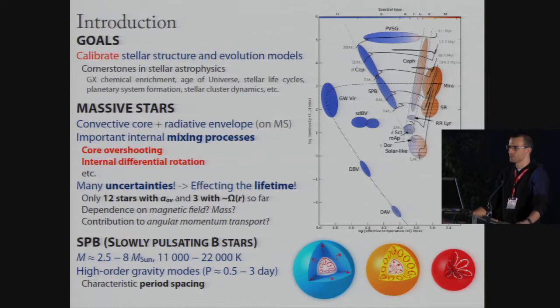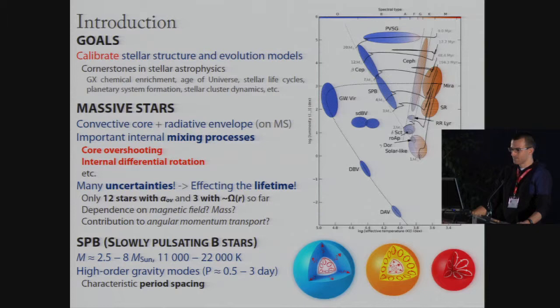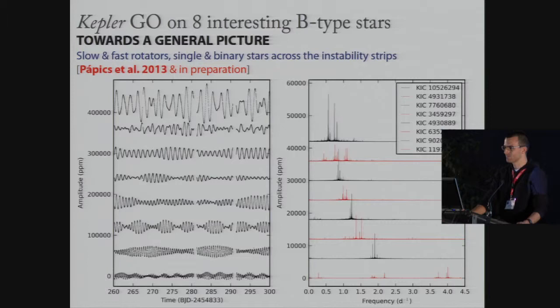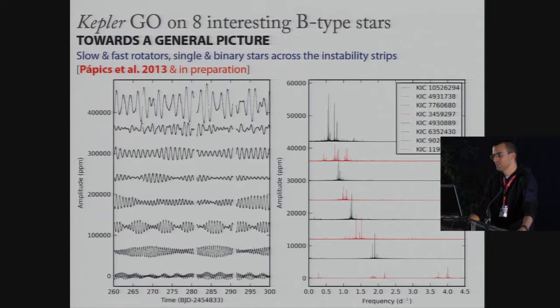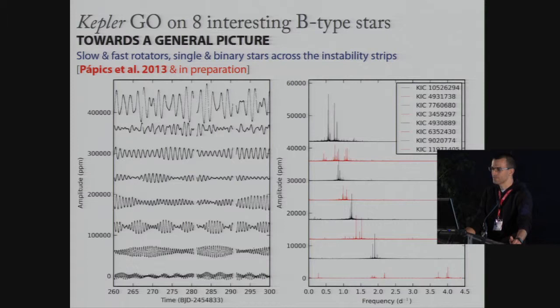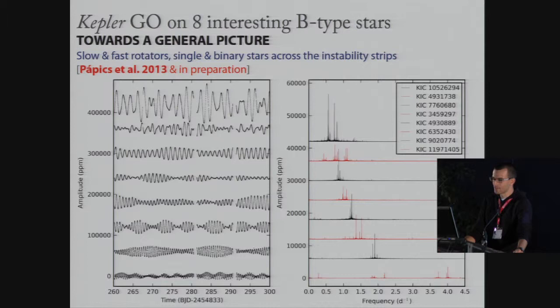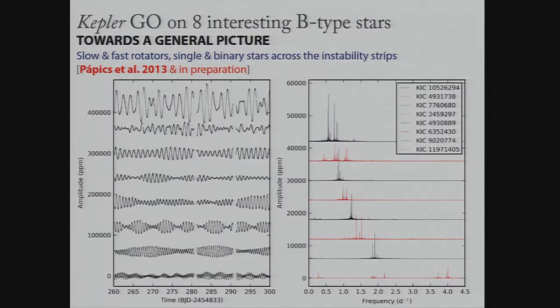As Don already showed, we have basically three stars with some constraints on the internal rotation rate, of course very limited constraints, and only 12 stars where we could put some constraints on the overshooting parameter. I will talk about slowly pulsating B stars, which can be found here in the HRD diagram. These stars pulsate in high order gravity modes which show period spacing, which we have already heard about. I have a sample of eight B-type stars in the Kepler field, two of these stars were binaries. I already analyzed and published those results last year, and this year I started to work on the single stars, starting with the slowest rotating single star.